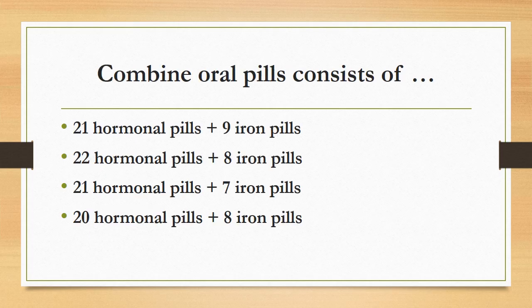Combined oral pills consist of: 21 hormonal pills plus 9 iron pills, 22 hormonal plus 8 iron, 21 hormonal plus 7 iron, or 20 hormonal plus 8 iron? The correct answer is 21 hormonal pills plus 7 iron pills.